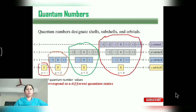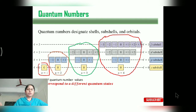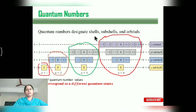To summarize the three quantum numbers: N indicates the size of the orbital, L indicates the shape of the orbit, and ml indicates the orientation of the electron in the orbit. These quantum numbers designate the shells, sub-shells, and orbitals.